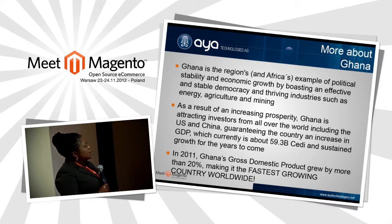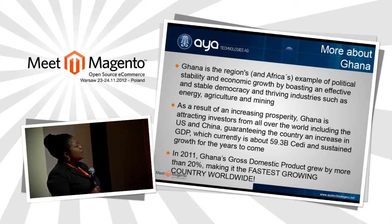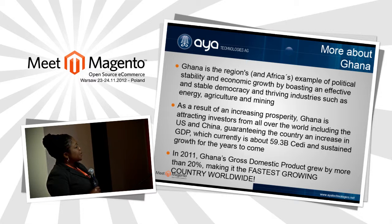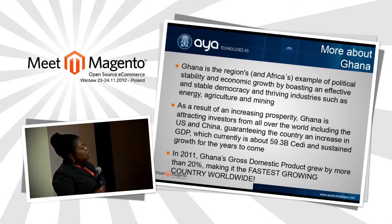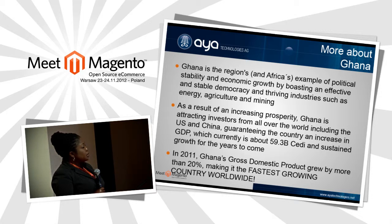Looking at Ghana's economic stability and growth, the key areas are agriculture and mining industries, which have the higher numbers. Ghana is also trying to attract more investors from countries such as the US and China. The estimated GDP is about $59.3 billion. Looking at GDP growth, it's about 20% year-on-year, which makes Ghana one of the fastest growing countries worldwide.